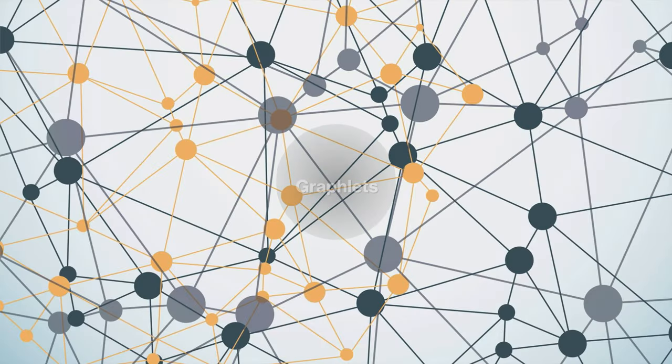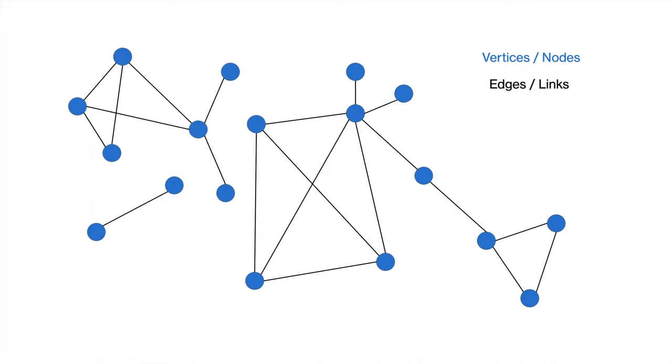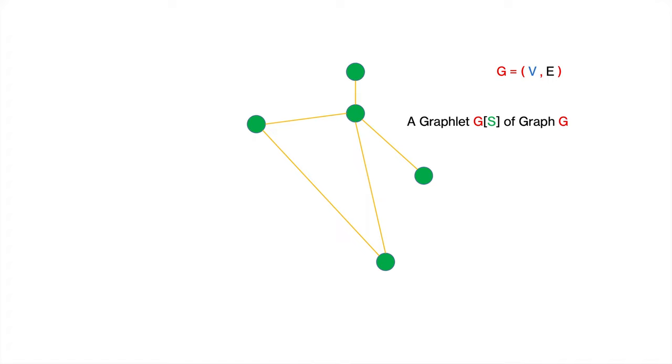Today we will learn about graphlets. So we have a bunch of vertices and some edges, and what we get is a graph. Now we take a subset of the vertices such that all vertices in this subset are connected in the original graph. We also pick all the edges among all vertices in this subset. What we get is a graphlet.